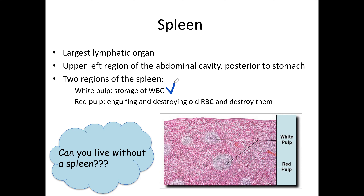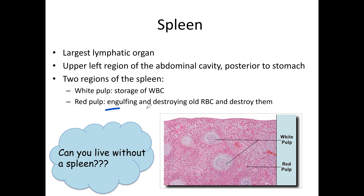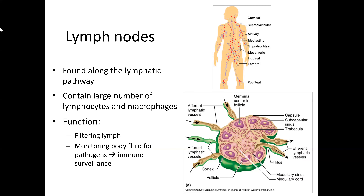The spleen has two functions: storage of white blood cells (related to the lymphatic system), and helping the body get rid of old, non-functioning red blood cells. Can you live without a spleen? Yes — the liver will partially take over the function of engulfing and destroying old red blood cells, and white blood cells will be stored in other lymphatic organs like lymph nodes.